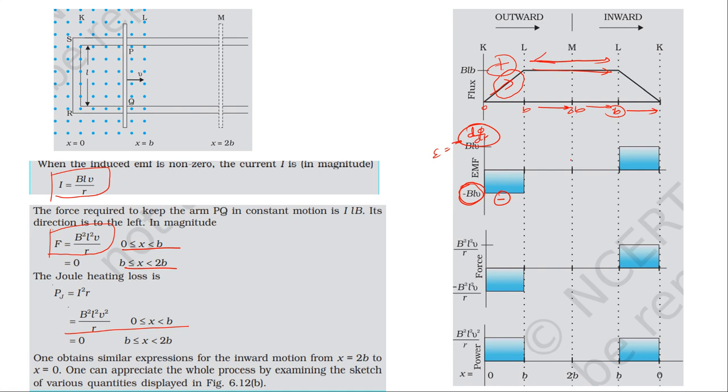When the slope is zero, EMF is zero. From b to 2b, slope is zero so EMF is zero. EMF equals negative slope of flux-time graph. When slope is negative (flux decreasing), minus of negative gives positive EMF.